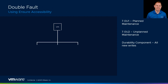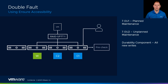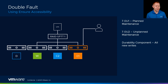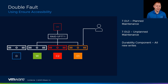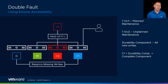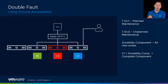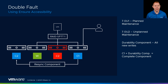Let's walk through a failure scenario. We've got host 4 in maintenance mode with Ensure Accessibility, the 60-minute timer hasn't elapsed, and writes are going to our durability component and component 2. But then something happens to the host where component 2 lives — a controller failure, disk failure, or something else. Now we're in a double fault state. At that point, we take host 4 out of maintenance mode, and because we've got our durability component, we can resync the missing writes and regain access to our VM. That's where Enhanced Data Durability comes into play.